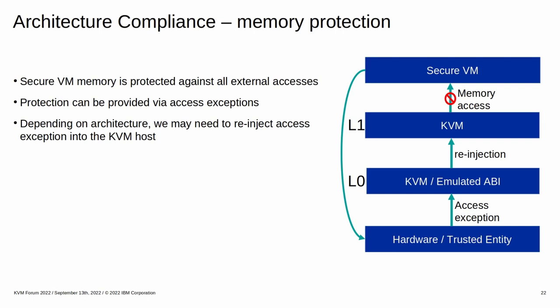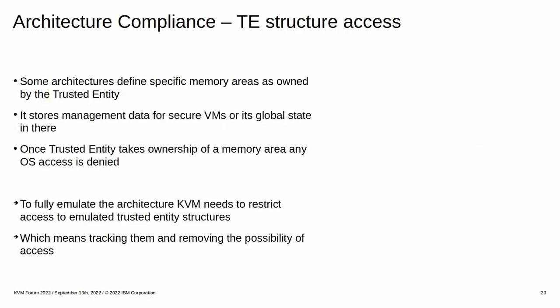Architecture compliance largely revolves around memory protection, because nesting allows a level 1 VM to try to access secure memory. If it tries, we need to report the correct address and exception type to level 1 for the OS's memory management. On some architectures, level 0 KVM donates memory to the trusted entity when creating VMs, vCPUs, and on initialization. The donated memory can only be accessed by the trusted entity and is used to store management data. In order to emulate the donation, level 0 needs to take access rights away from level 1 for those pages, as well as inject access exceptions on access.